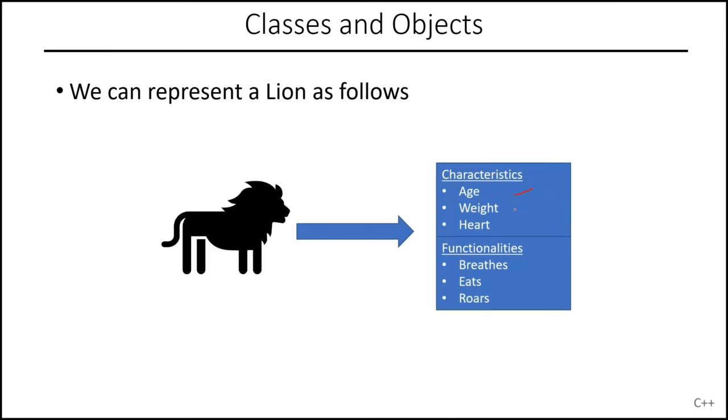All right, here's another one. There's a lion. It has an age, has a weight, has a heart. It can breathe, it can eat, and it can roar. That's something the lion can do.